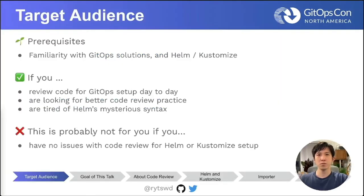This talk specifically focuses on code review with GitOps. As a prerequisite, it is expected that you're familiar with GitOps solutions and also the use of Helm and/or Kustomize with GitOps. For the target audience: if you review code for GitOps setup day to day, are looking for better code review practices, or just had enough of Helm chart syntax, hopefully this is the talk for you. This is probably not for you if you have no issues with code review with Helm, Kustomize, or other tools for cluster setup at the moment.